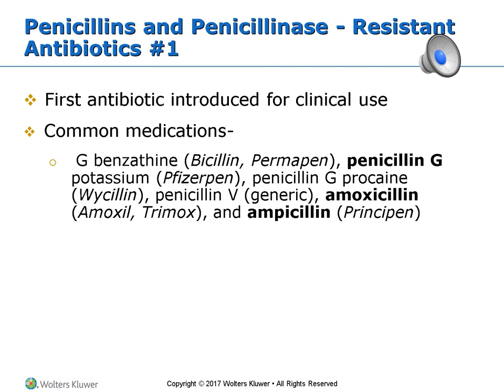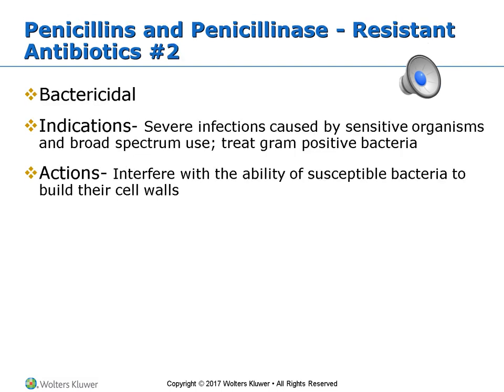Penicillin was discovered in the 1920s by Sir Alexander Fleming and was the first antibiotic used. Types we see today include penicillin G, amoxicillin, and ampicillin. Penicillins interfere with cell wall synthesis and kill the bacteria, treating gram-positive bacteria. They are used a lot for pharyngitis, streptococcal infections, pneumococcal infections, staphylococcal infections, diphtheria, anthrax, and syphilis.